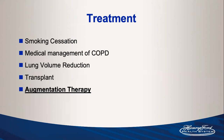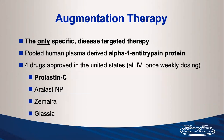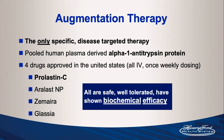Last but not least, augmentation therapy is the only specific and disease-targeted therapy for alpha-1 antitrypsin deficiency. It is pooled human plasma-derived alpha-1 antitrypsin protein. There are four drugs approved in the United States; Prolastin-C is most commonly used with the longest track record since the late 1980s. All are given intravenously once weekly, are well-tolerated, and have shown biochemical efficacy — inhibiting neutrophil elastase and achieving serum levels above the protective threshold — but clinical efficacy remains highly controversial.